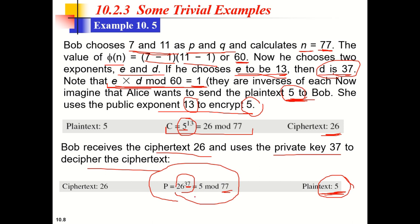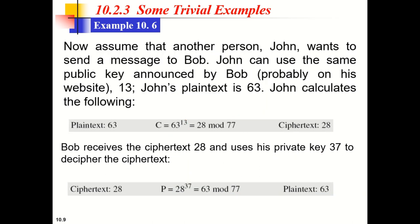To compute 26^37 mod 77, we use the repeated squaring (square-and-multiply) method: compute 26^1, 26^2, 26^4, ... mod 77, then combine powers that sum to 37. For example, 37 = 32 + 4 + 1, so we multiply 26^32 × 26^4 × 26^1 mod 77. This avoids multiplying 26 a full 37 times.